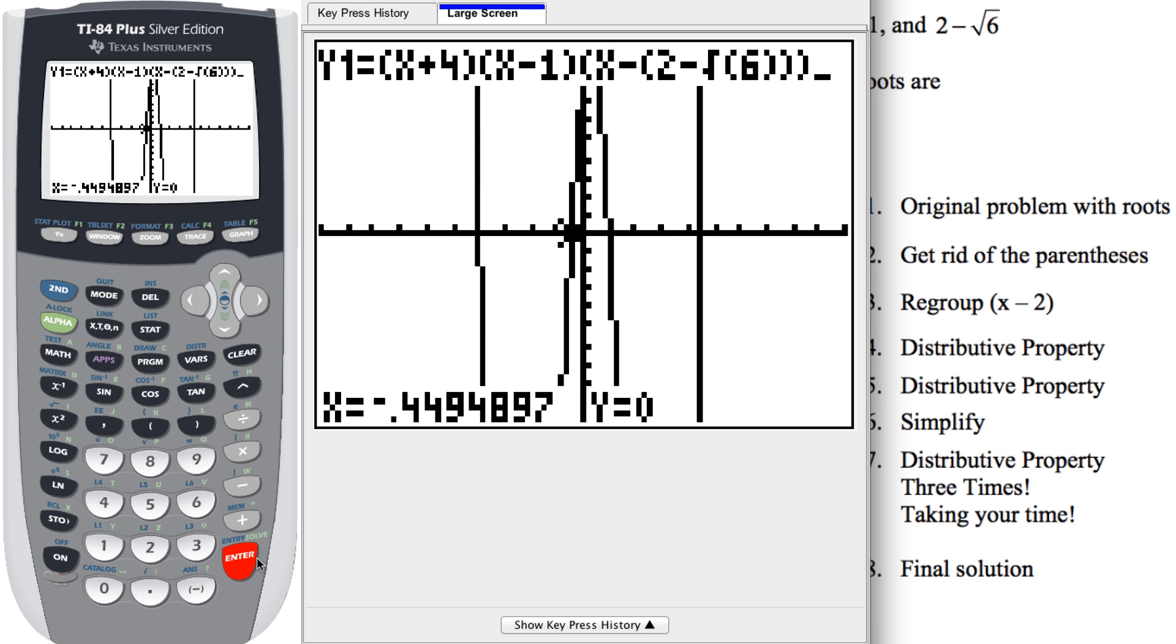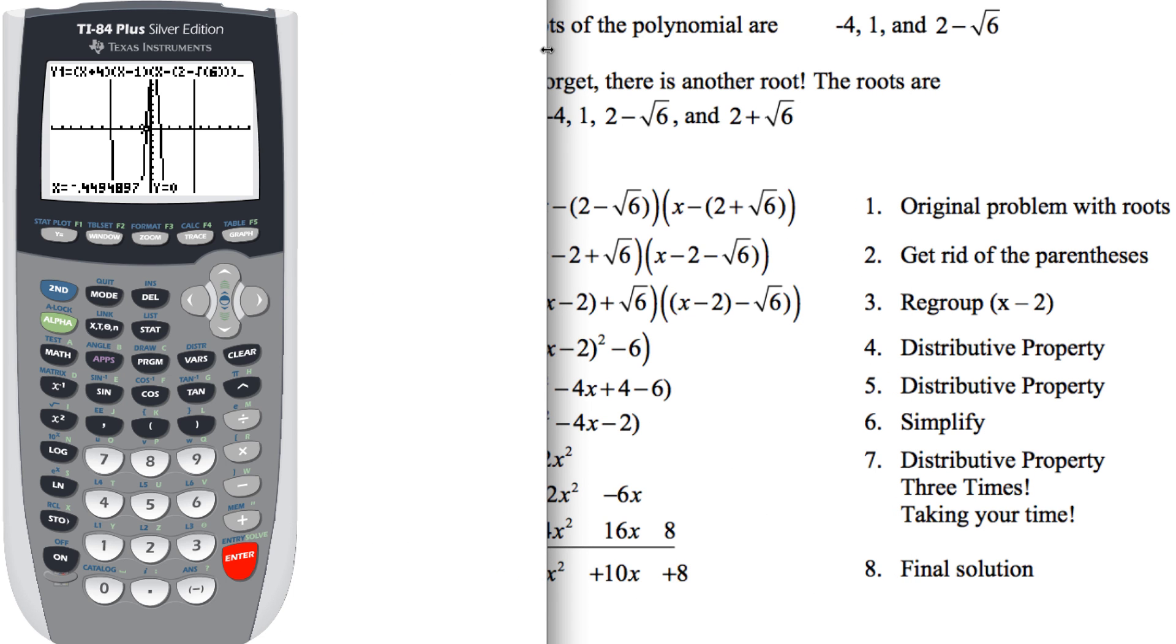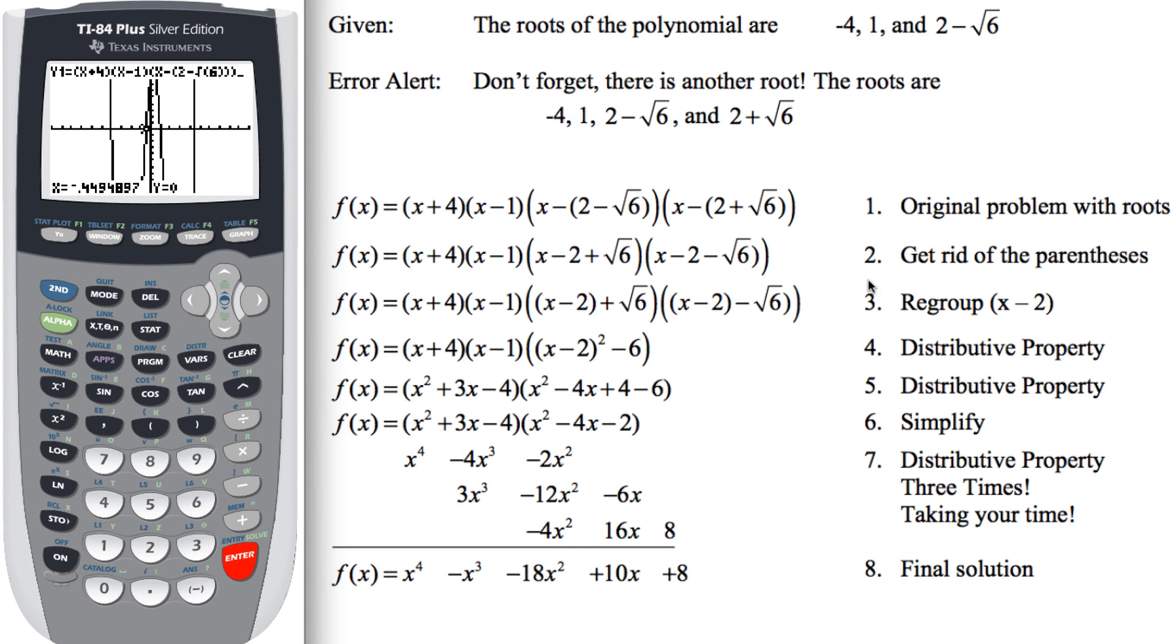So that tells me two things from Mr. TI-83. So let me get this back out of the way over here. It tells me one, that my original problem with its roots, I put that in correctly. But since my tables match the y1 and y2 columns, that tells me that my final solution is in fact the correct polynomial for those given roots.